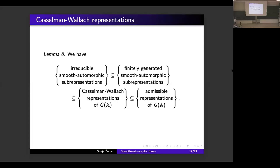Quite a few interesting smooth automorphic representations are Casselman-Wallach representations. Let me mention that Vogan's result on Casselman-Wallach representations of G_infinity easily implies that the class of Casselman-Wallach representations of G(A) is closed under taking quotients and taking closed subspaces. We also have the fundamental fact that two Casselman-Wallach representations of G(A) are equivalent if and only if they are infinitesimally equivalent — more precisely, if and only if their (g_infinity, K_infinity, G(A_F))-modules of K_infinity-finite vectors are isomorphic. We show that every finitely generated smooth automorphic sub-representation is a Casselman-Wallach representation of G(A), and in particular every irreducible smooth automorphic sub-representation is a Casselman-Wallach representation. It also follows from the definition that all Casselman-Wallach representations are admissible, so every finitely generated smooth automorphic sub-representation is admissible.